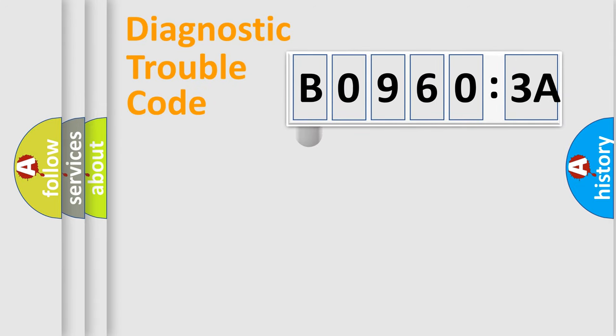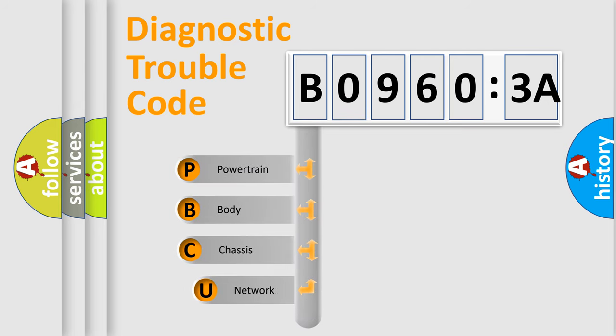First, let's look at the history of diagnostic fault code composition according to the OBD2 protocol, which is unified for all automakers since 2000. We divide the electric system of automobile into four basic units.